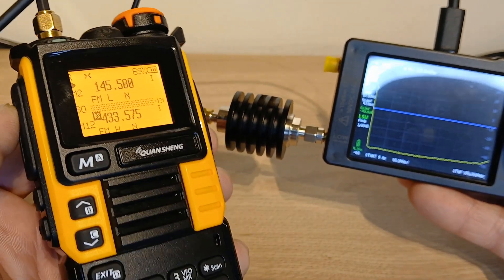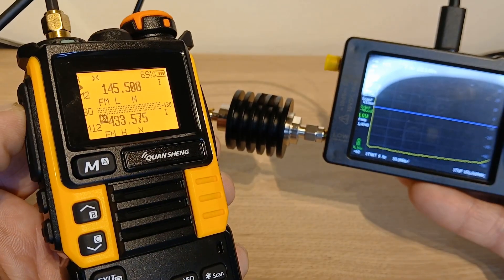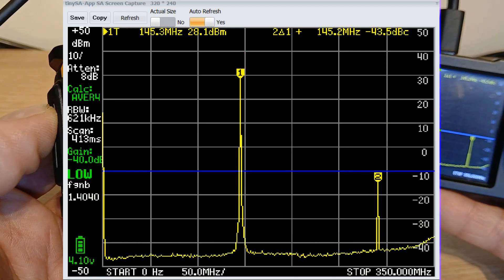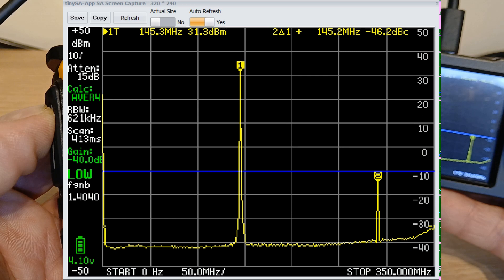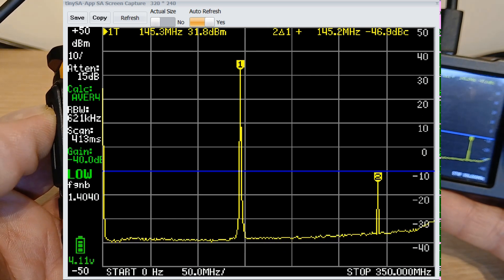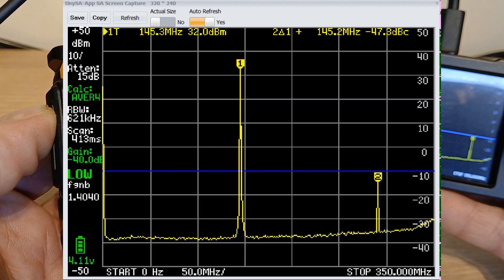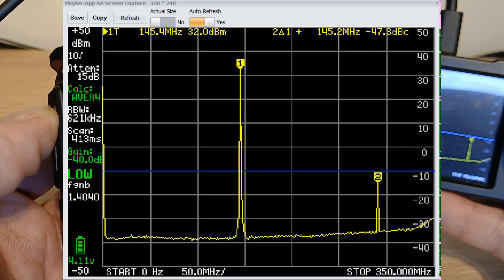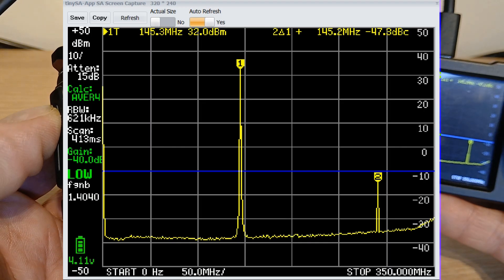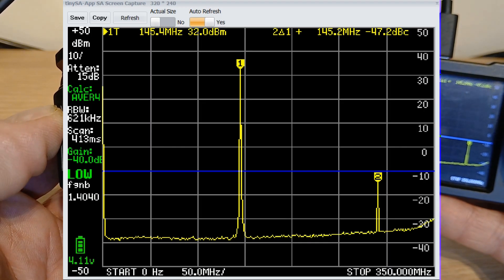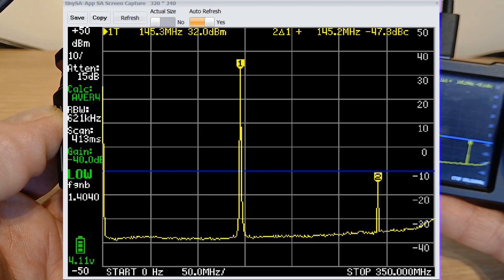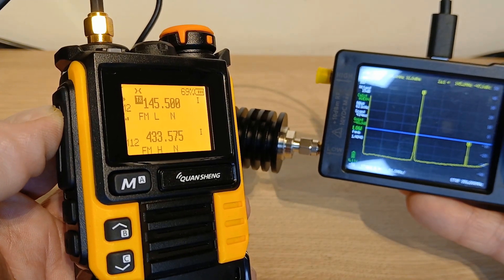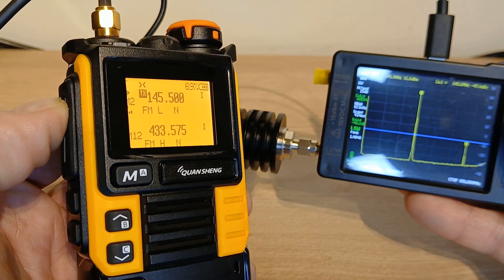First up is the Quansheng UVK5. You can see our fundamental is about 30 decibels, which is where I thought it would be. And then if you look just to the right hand or top right hand side of the screen, you can see that first harmonic with the number two marker is just under the blue line at negative 47 decibels. So that's a pass. That's fairly clean, working okay. That's the Quansheng UVK5. Let's move on to the next radio.